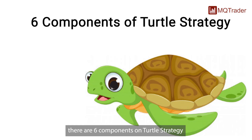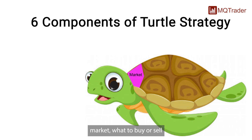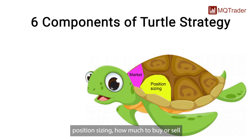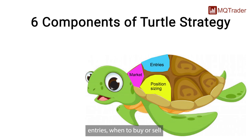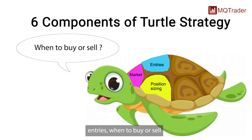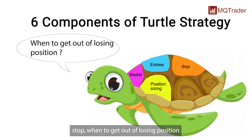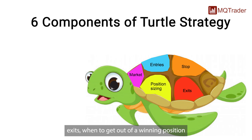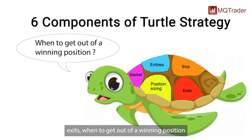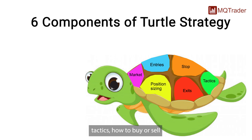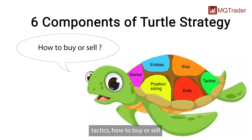There are six components of turtle strategy: Market — what to buy or sell; Position Sizing — how much to buy or sell; Entries — when to buy or sell; Stops — when to get out of a losing position; Exits — when to get out of a winning position; and Tactics — how to buy or sell.